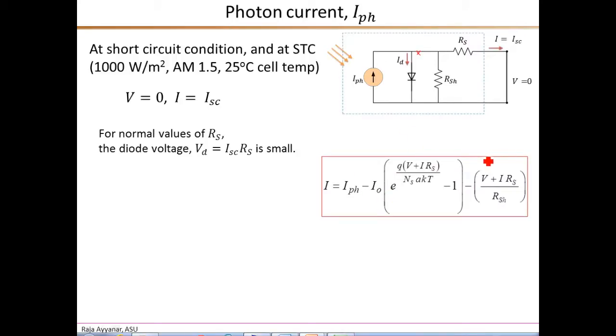Now getting back to the short-circuit condition, at normal values of RS, the series resistance, we can say that the diode voltage VD, which is 0 plus ISC times RS, that is also going to be small because RS is in the range of 0.2, 0.3 ohms. And even though ISC can be 8, 9 amperes, their product is still small, or at least it is comparable to the thermal voltage. So in this expression, this is really e to the VD diode voltage over VT. So if these two are comparable, then e to the close to 1 minus 1, that is going to be a small number. And that multiplied by I0, which is in the nano ampere region, we can say that for short-circuit condition, for small values of RS, this entire term corresponding to this diode current ID is negligible, close to 0.